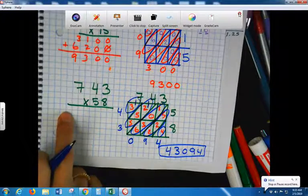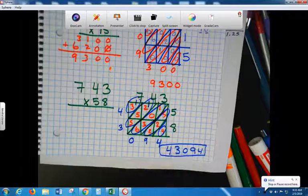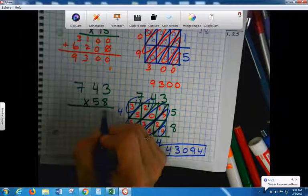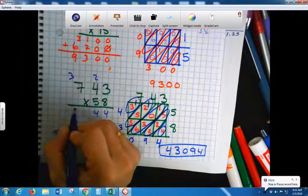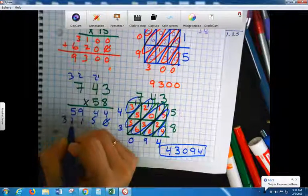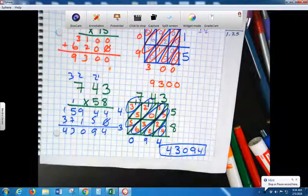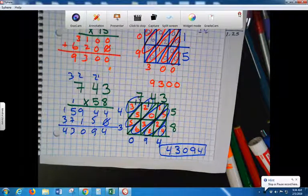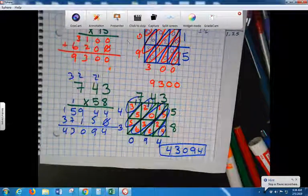Now let's check for those of you who did the traditional way. For those of you who did the traditional way, did you get 43094? Yeah. Let's see. 24, carry the 2. 32 plus 2 is 34, carry the 3. 56, 59. 0. 15, 1. 21, carry the 2. 35, 37. 4, 9, 10, 1. 12, 13, 1, 4.